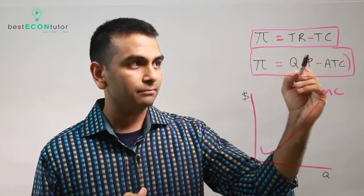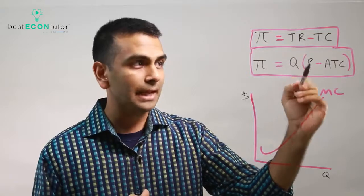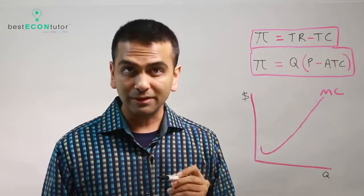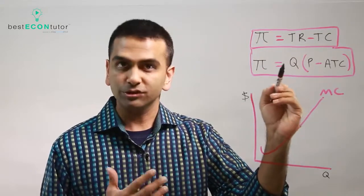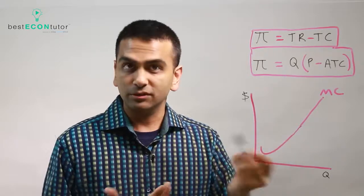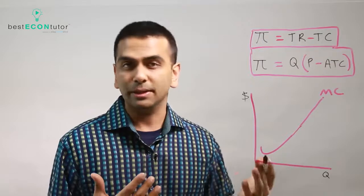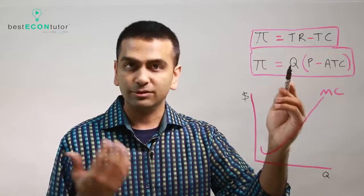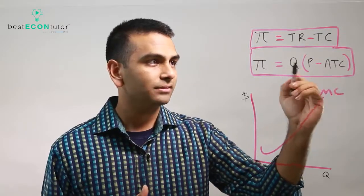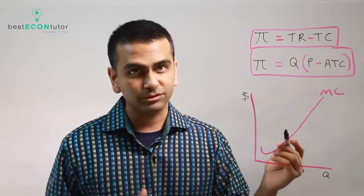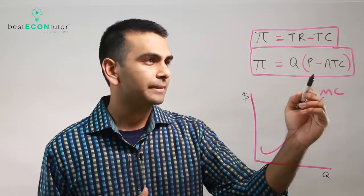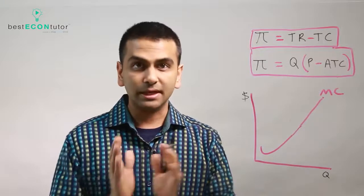If you multiply the Q out, distribute it out, Q times P is your total revenue because how many items you're selling times the price at which you sell each one for. If you sell five items for 20 bucks each, 5 times 20 is how much revenues you make minus ATC times Q is your total cost, which we saw from the previous module. So that's the same thing.